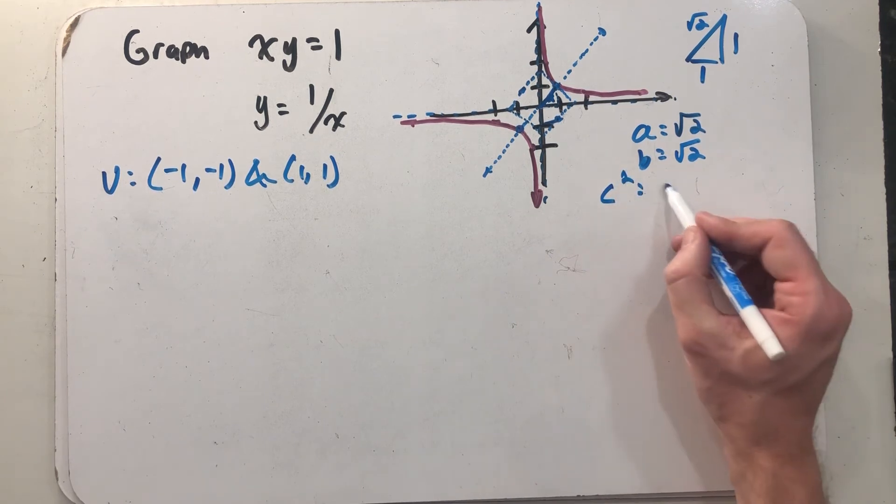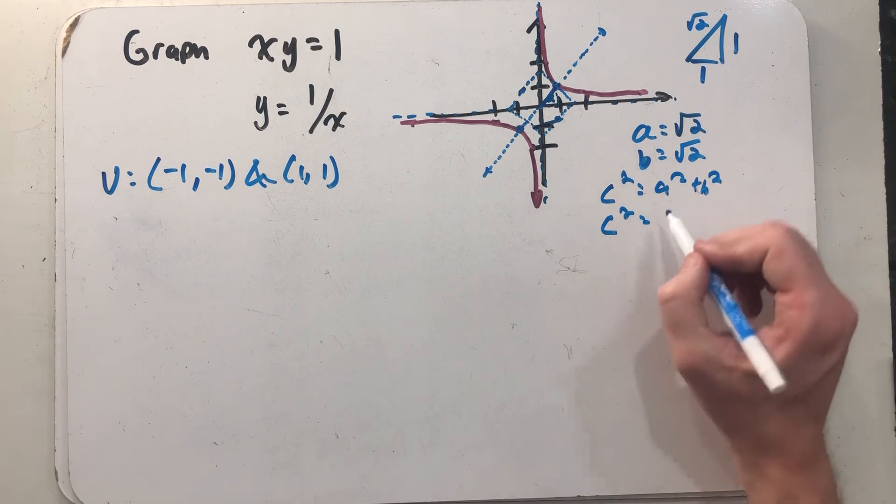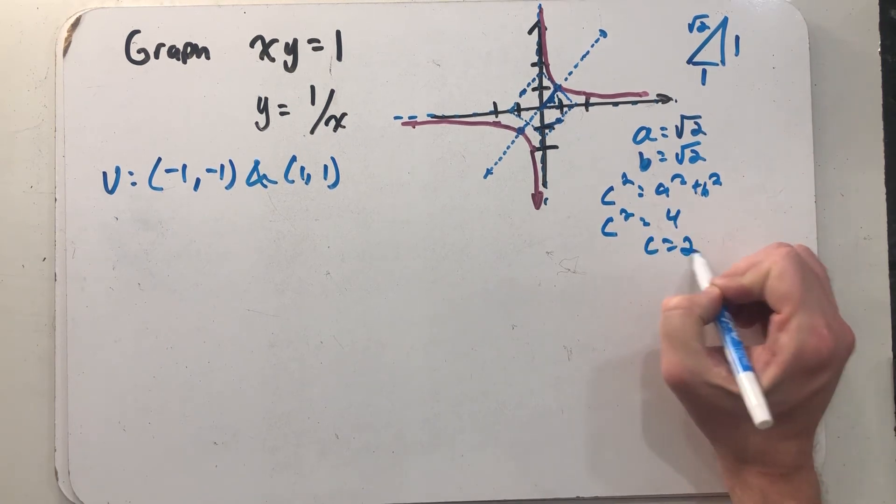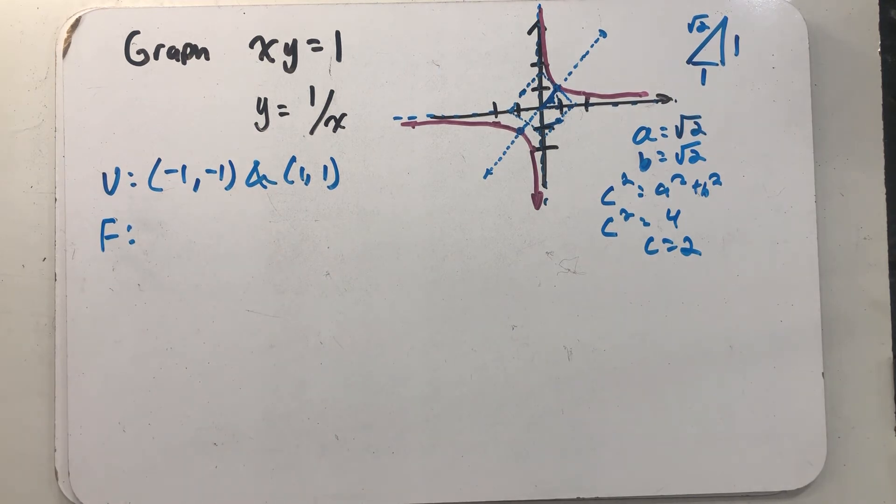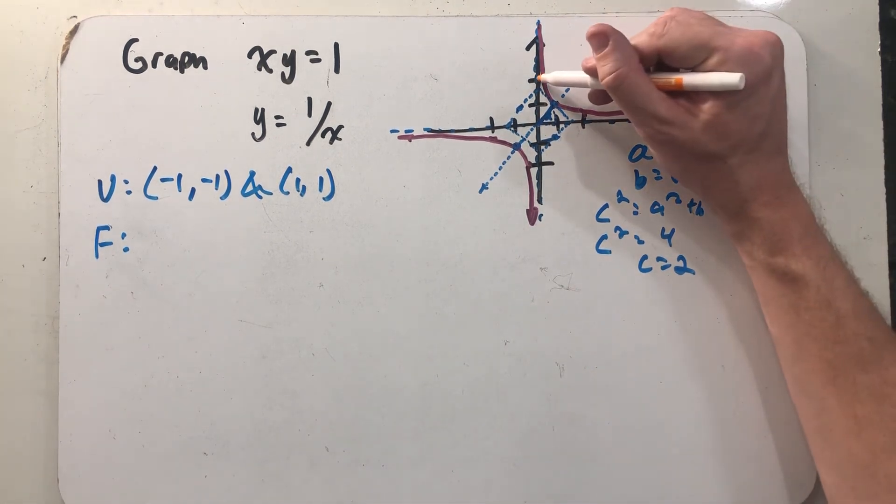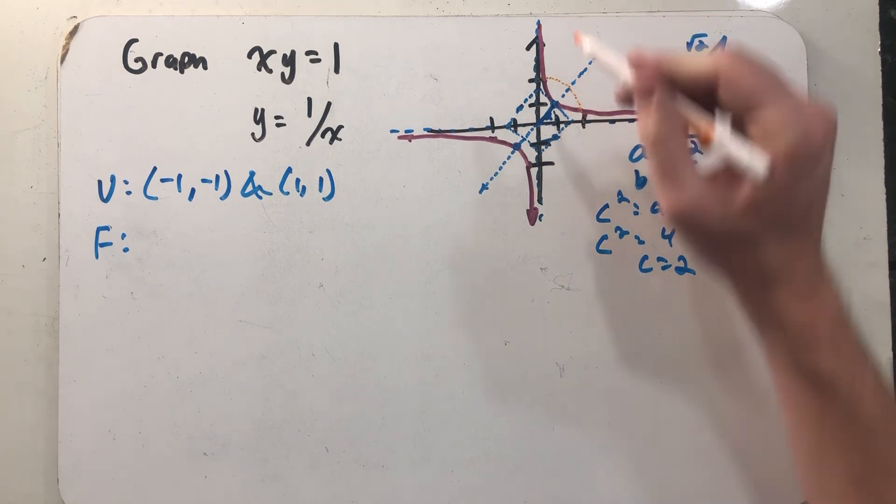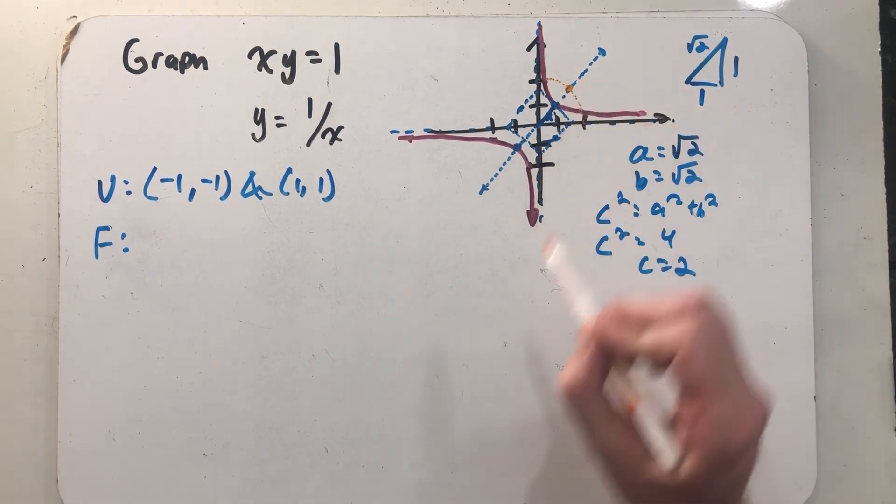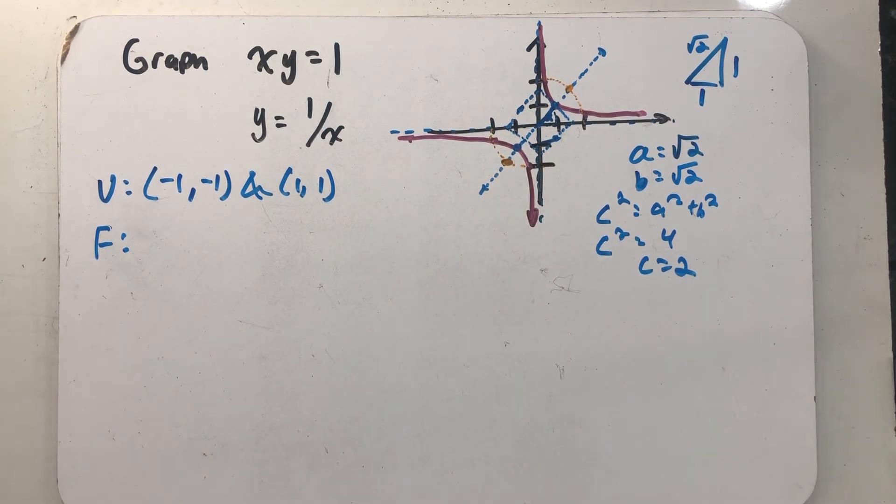Well, c squared is a squared plus b squared. So let's see, c squared here would be four and c is two. So my foci are on the transverse axis, but two units away from the center. If you thought about just drawing a little circle of radius two through there, that intersection point is where that focus is. That intersection point is where that focus is.